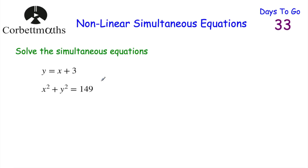We're going to look at how to solve simultaneous equations where they're both non-linear. Feel free to press pause and try the questions yourself, otherwise I'm going to go through them. So let's have a look at our first one: solve the simultaneous equations y equals x plus 3, and x squared plus y squared equals 149.